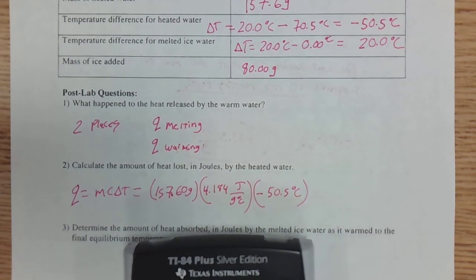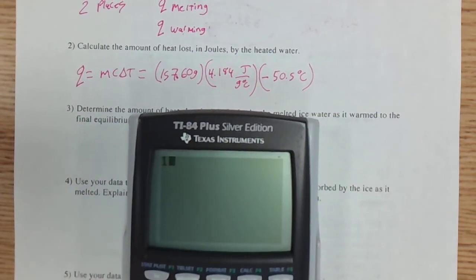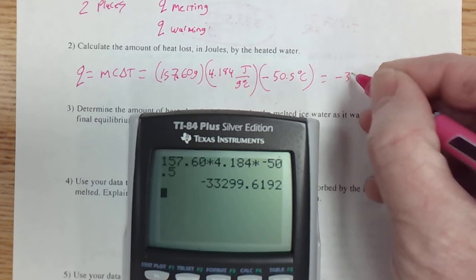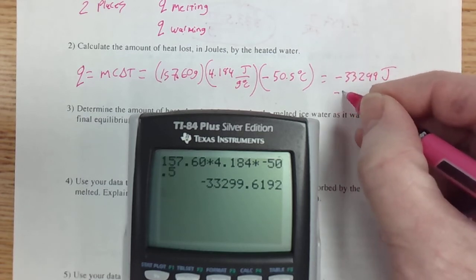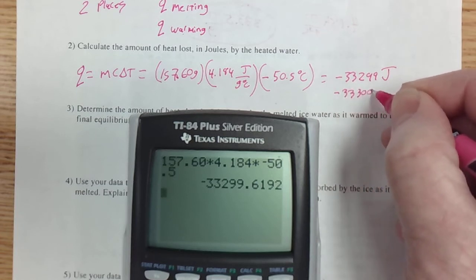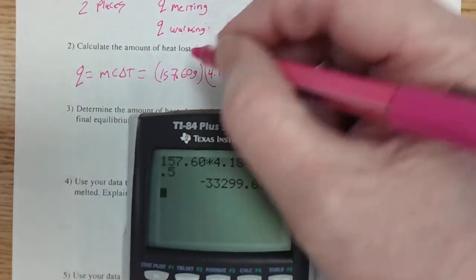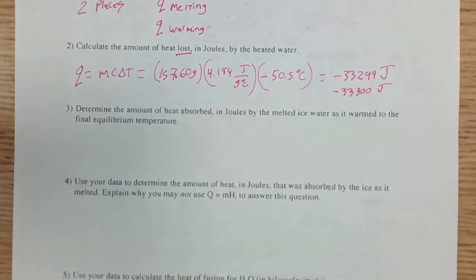So I am going to run those numbers through my calculator. 157.60 times 4.184 times a negative 50.5, and I get equals negative 332.99 joules. We'll call that negative 33,300 joules rounding off. And the negative means that was heat lost, but that's great because we're looking for the amount of heat that was lost. So that's good.